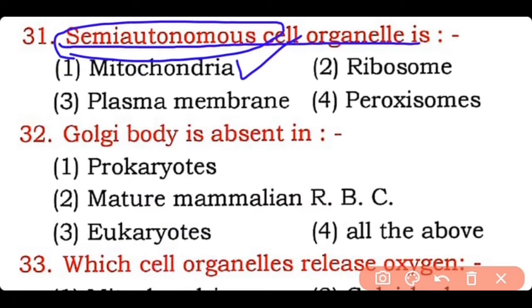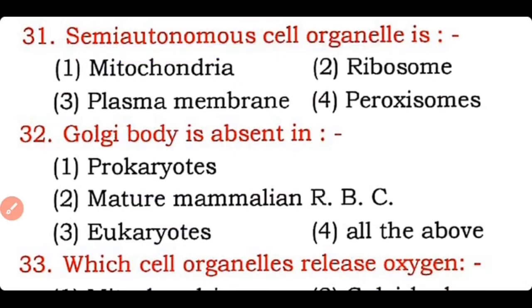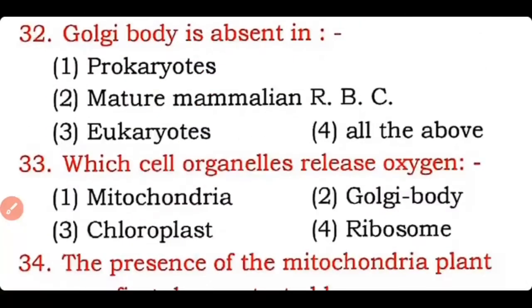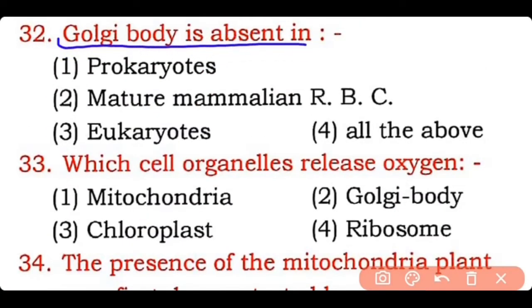Question 32: The Golgi body is absent in — prokaryotes, mature mammalian red blood cells, eukaryotes, or all of the above?